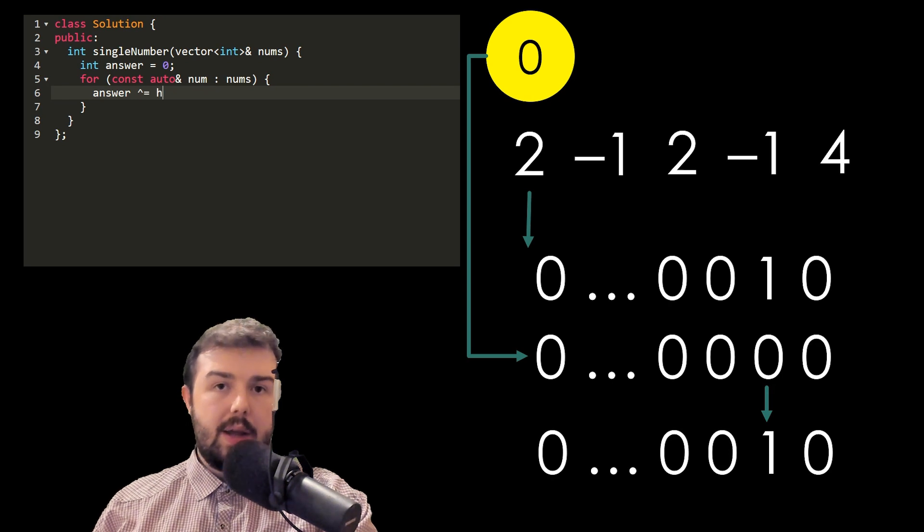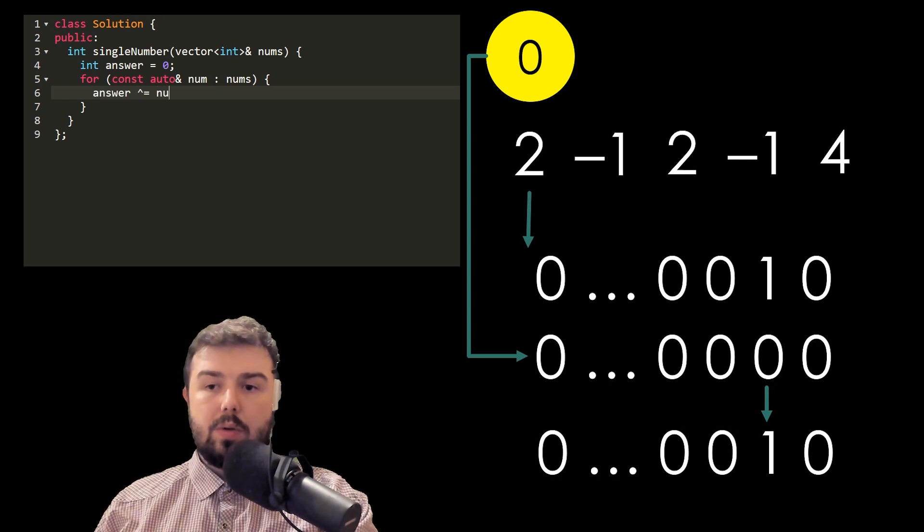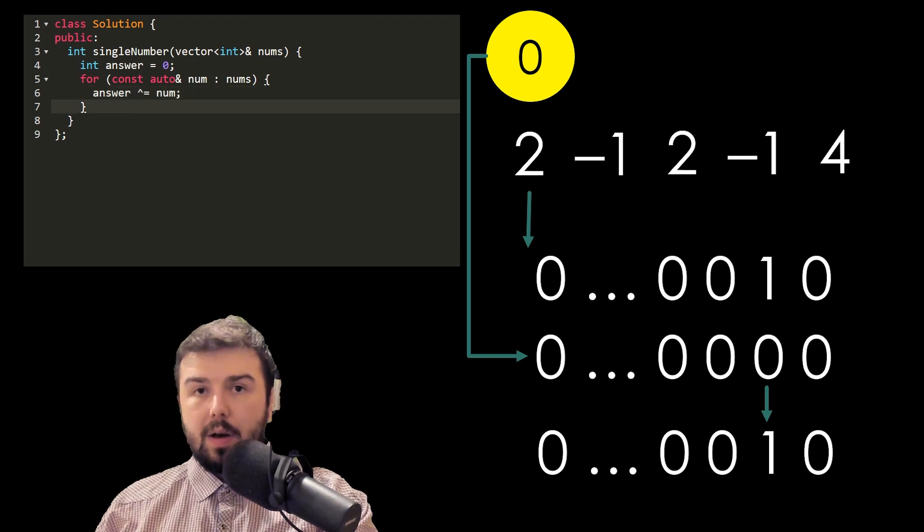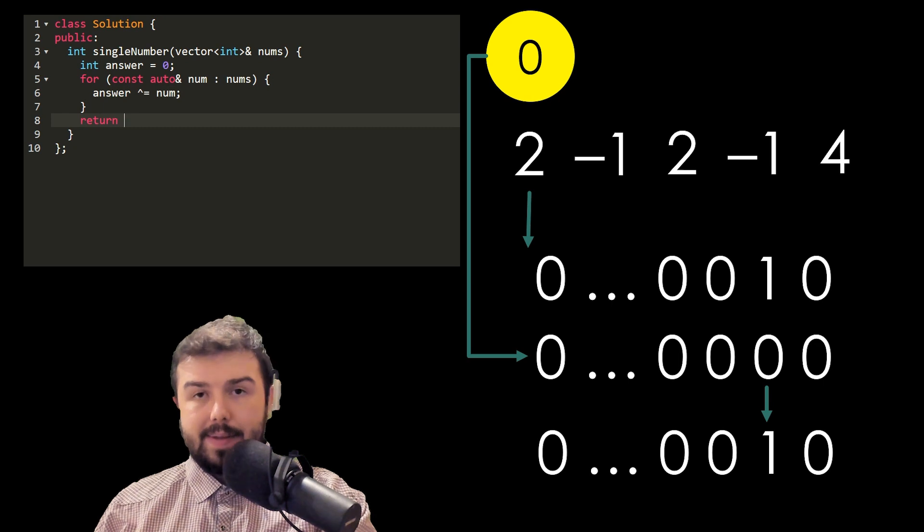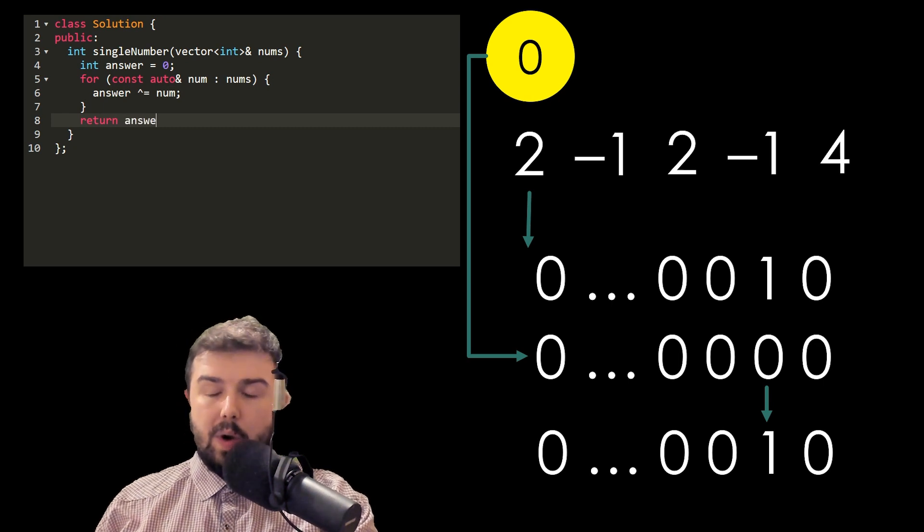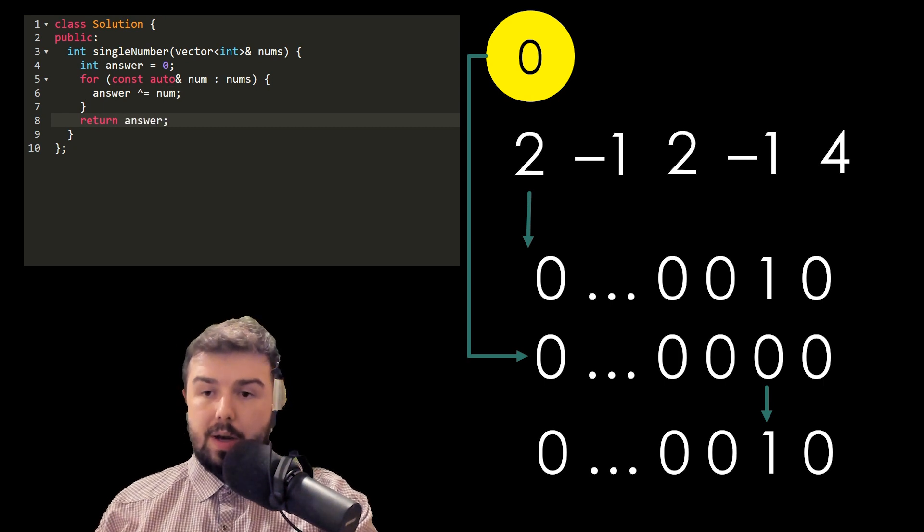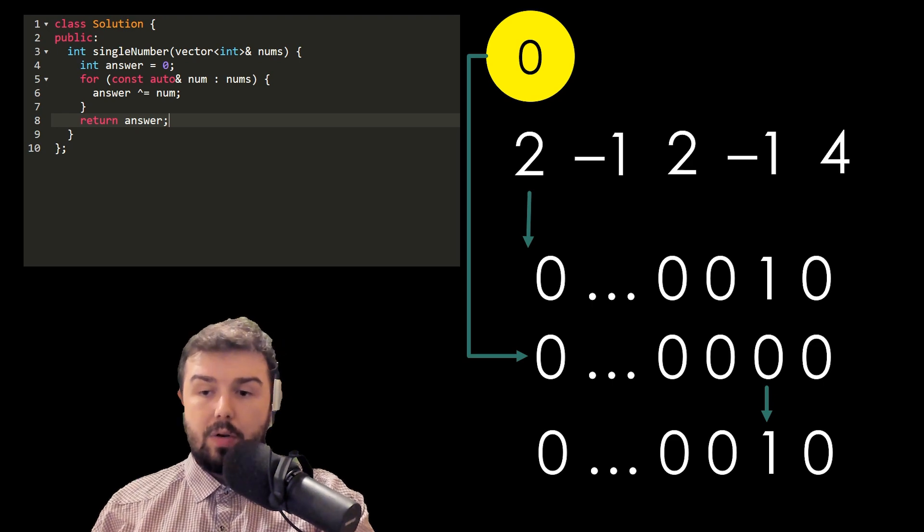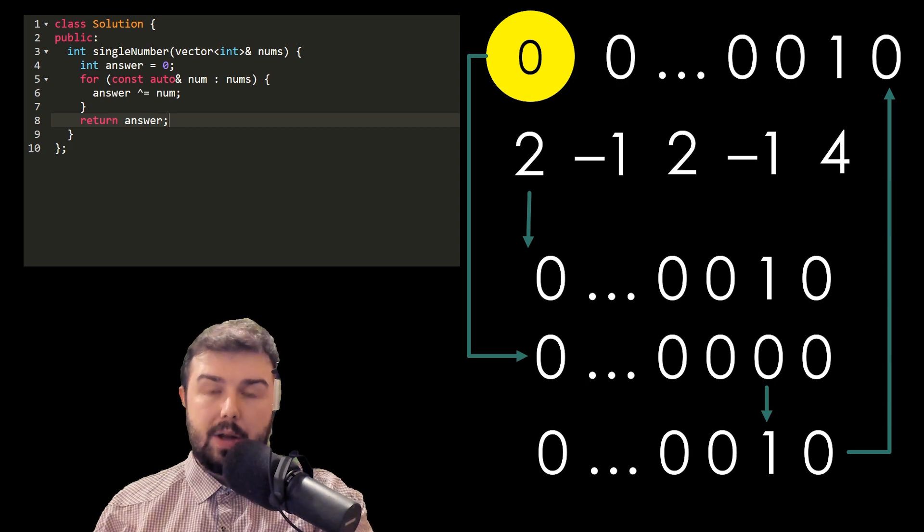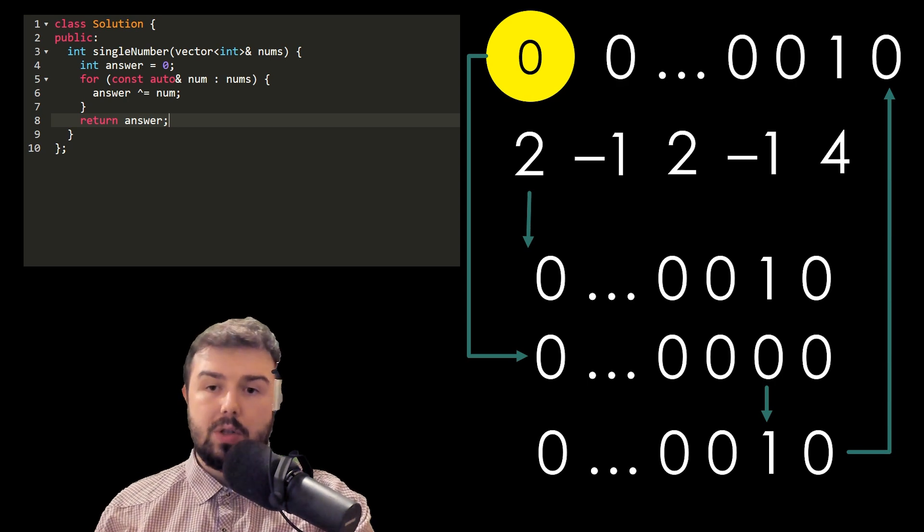As the initial answer we have zero, so zero is all zeros. We will apply XOR operation. XOR operation results in 1 only if one of the numbers is 1 and another is 0. We have here only one such combination: 1 and 0, that results in 2. Pretty much the same number because XOR operation with zero results in the same number. As a temporary answer we have 2.